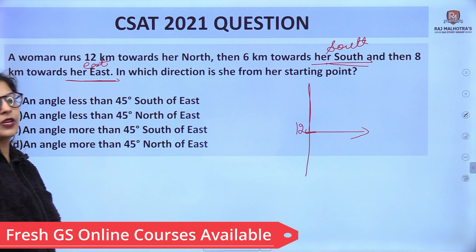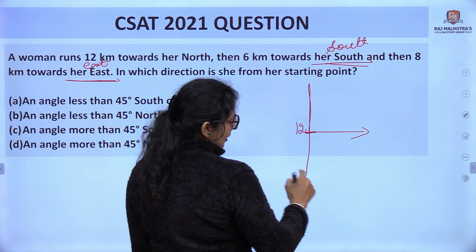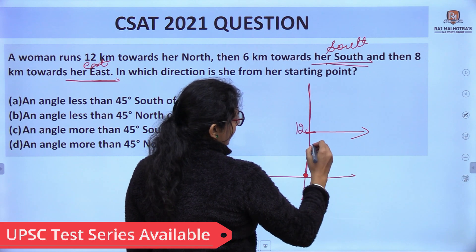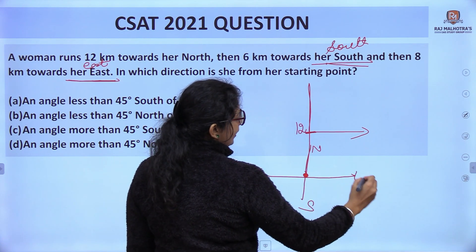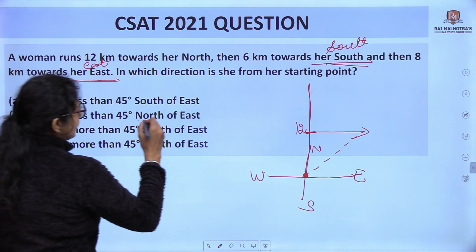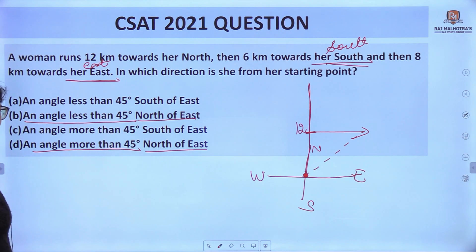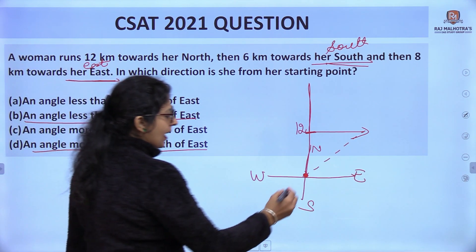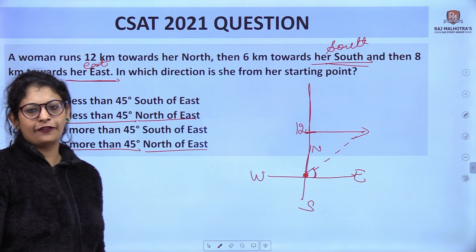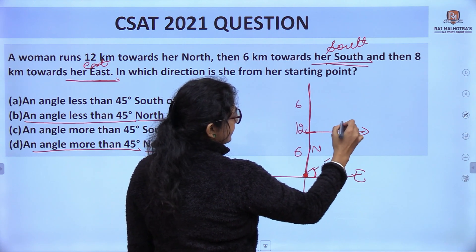The question asks: in which direction is she from the starting point? This is the starting point and she has arrived here. We make a chart with north, south, west, east. She is in the northeast direction. We have two options of northeast — B option and D option. So we have to find the angle: is it less than 45 degrees or more than 45 degrees? As we know, this is 12 minus 6 equals 6 upward, and 8 eastward.